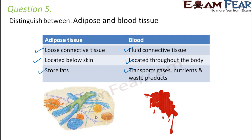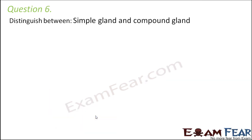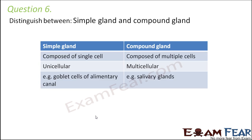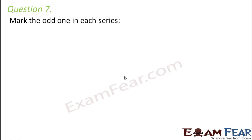Question six: distinguish between simple gland and compound gland. A simple gland is made up of only one cell — unicellular. A compound gland is made up of multiple cells — multicellular. An example of a simple gland is the goblet cells of the digestive tract, while an example of a compound gland is the salivary gland, which secretes saliva inside the mouth.